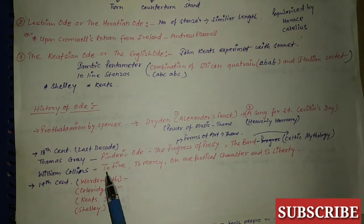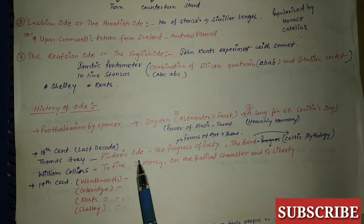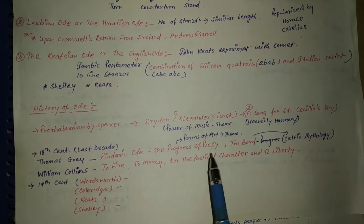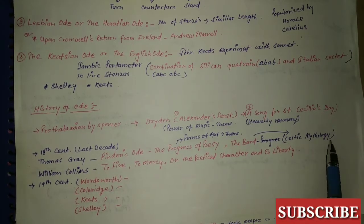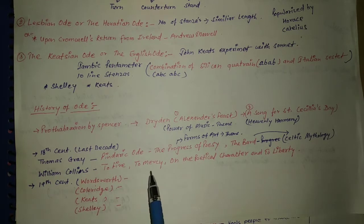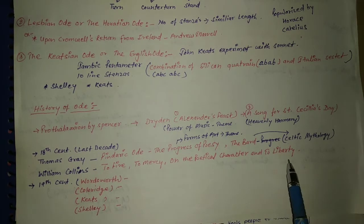Thomas Gray wrote Pindaric ode and The Progress of Poesy and The Bard, related to Celtic mythology. William Collins wrote The Ode to Mercy, On the Poetical Character, and To Liberty.